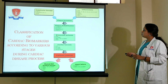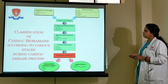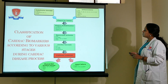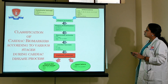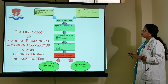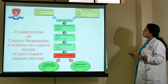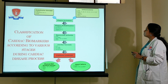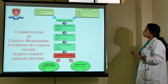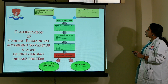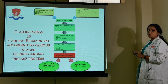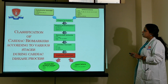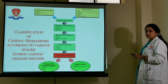This chart shows the classification of cardiac biomarkers according to various stages of cardiac disease. Starting with endothelial damage and inflammation leading to plaque formation, markers include LDL cholesterol and reactive oxygen species. Inflammatory markers include C-reactive protein, interleukins IL-6, IL-10, IL-12, IL-18, tumor necrosis factor, and compounds like homocysteine. After plaque formation there is destabilization of plaque.